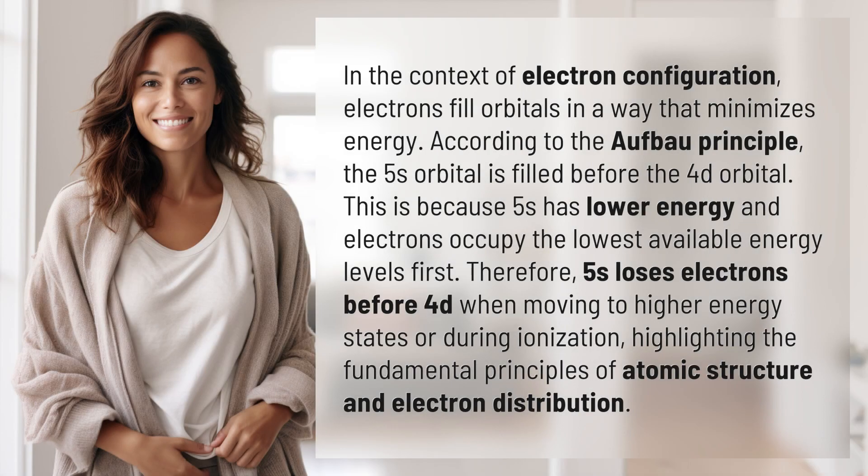In the context of electron configuration, electrons fill orbitals in a way that minimizes energy. According to the Aufbau principle, the 5s orbital is filled before the 4d orbital. This is because 5s has lower energy and electrons occupy the lowest available energy levels first.